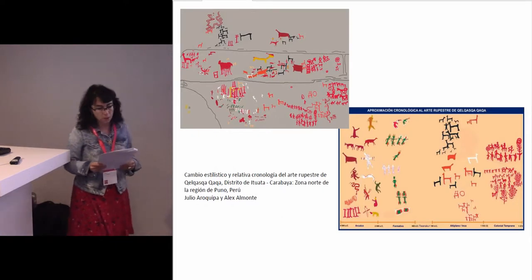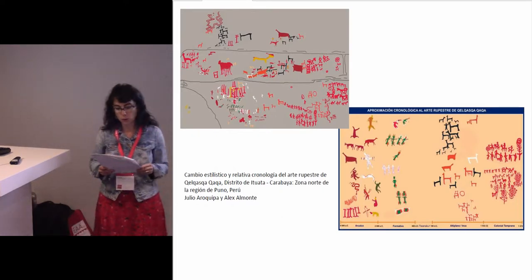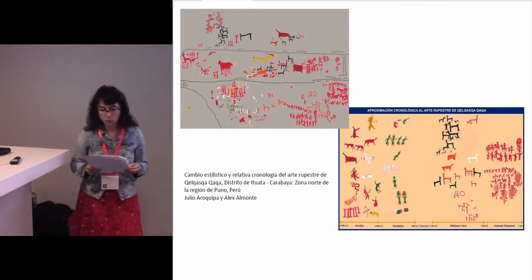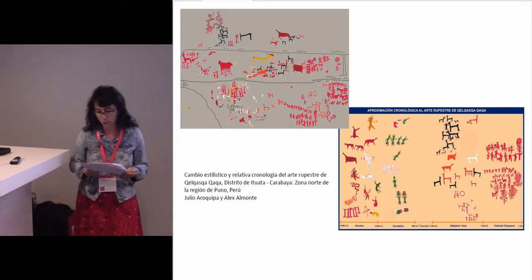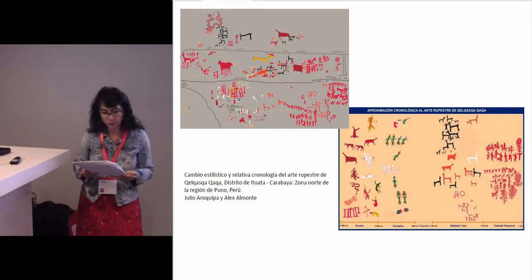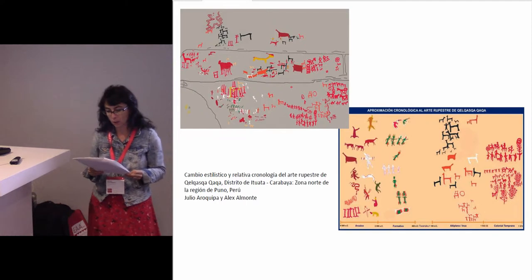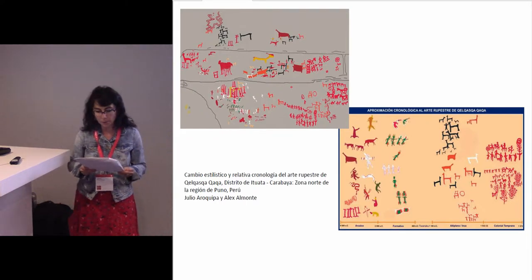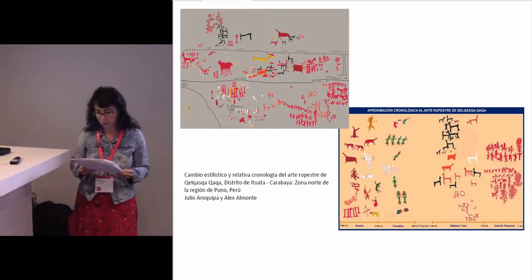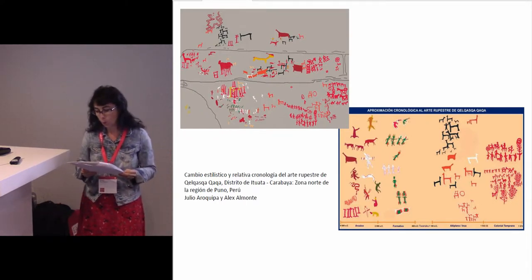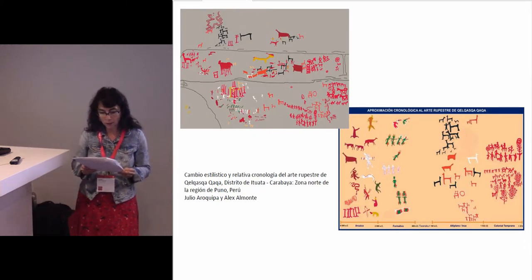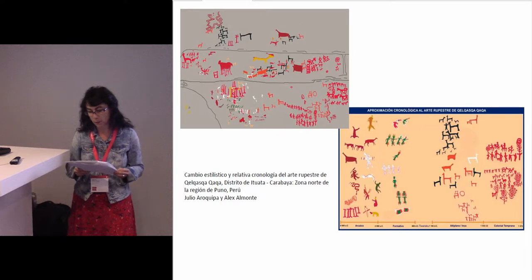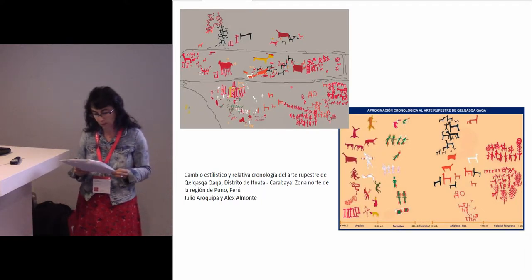Focusing on today's Peru territories, two stylistic tendencies are noted. The first one with aniconic representation, like abstract figures and designs. The second one with iconic representation, such as wild camelids and other animals, and human representation in hunting scenes.